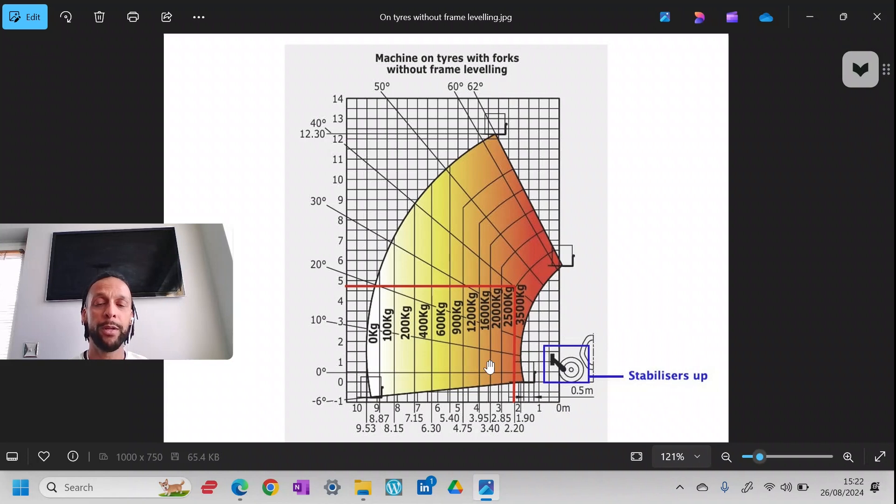You've got your diagram here, says stabilizers up, and on here it just shows without frame leveling, so it's just got the head in there for you to keep an eye on. So this one will lift up to 3.5 ton up to 2.2 meter radius. Let's draw my little thing there so you can see 2.2 meters. We could draw in there and that line going down to it, so it's not very clear there but you get my drift.